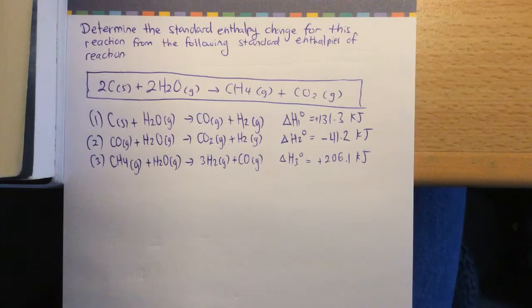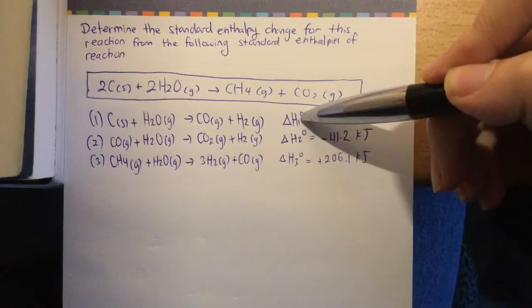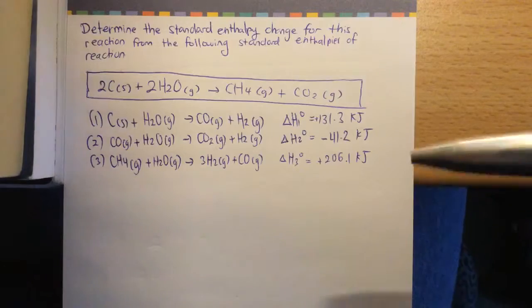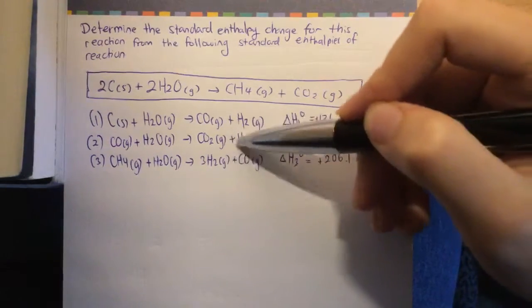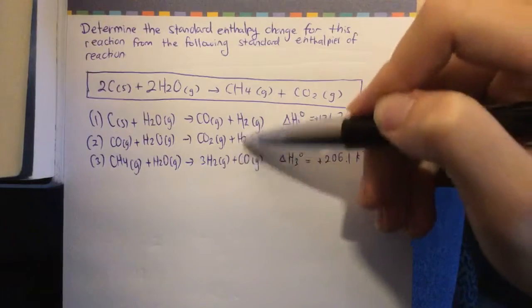We're given three key equations that we can work with, and essentially what Hess's law states is that this delta H, the enthalpy, is what's known as a state function, meaning that we can take any path, we can combine any of these pathways here, with these chemical reactions,